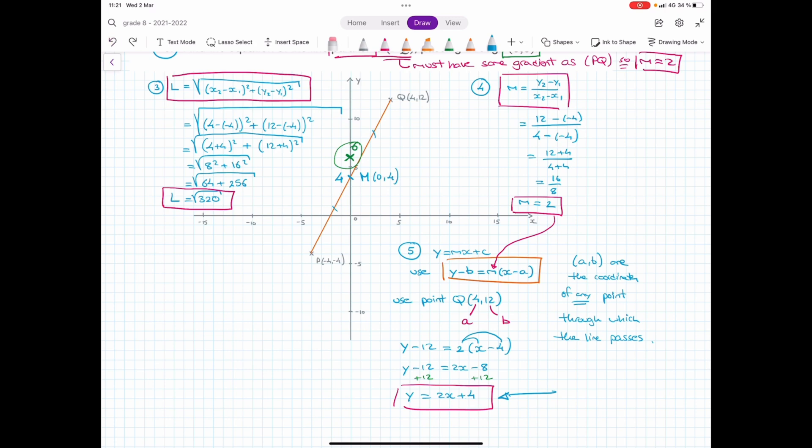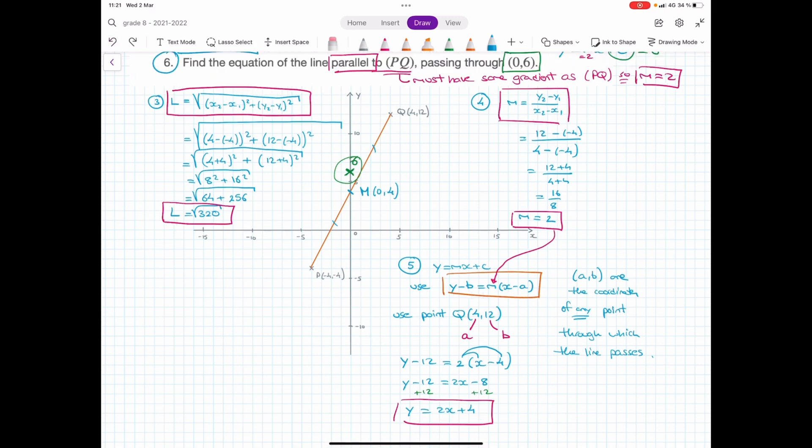So to answer that question, and I'll just answer it and I'll be right with you. To answer that question, without thinking that hard, I know that the gradient has to be equal to 2 and C has to be equal to 6. So I can just state Y equals to 2X plus 6. Done. That's the answer to that question.